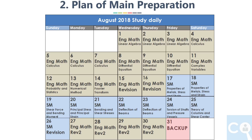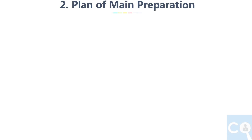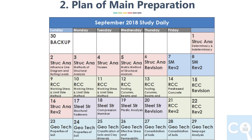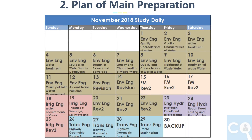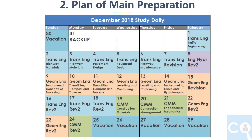Let's see the plan for every month — September, October, November, December. You can pause to note these down, or I will upload these images to Google Drive and share the links in the description. As you can see, there are 2 slots for revision: one after completing a subject, and another after completing the next subject. Please also note that you should practice aptitude at least 1 hour daily based on your comfort level.